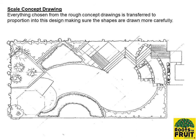You discuss that with the customer, and what you've started to do is create a design that reflects those styles, themes, and shapes within a garden. It's starting to take shape and form — now we can see what the garden is going to look like.